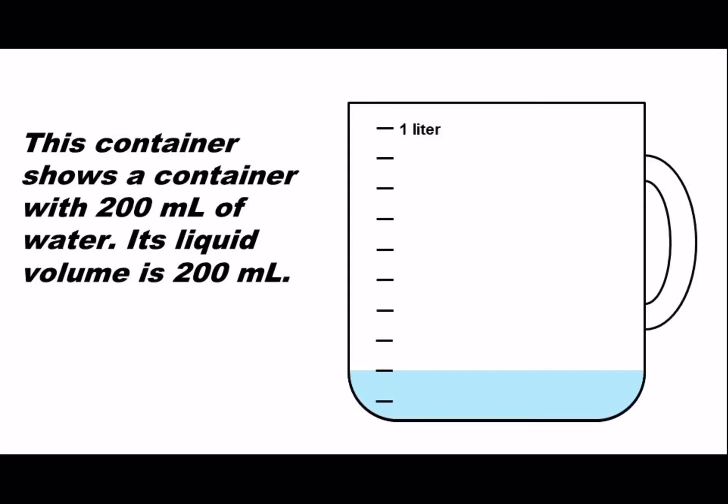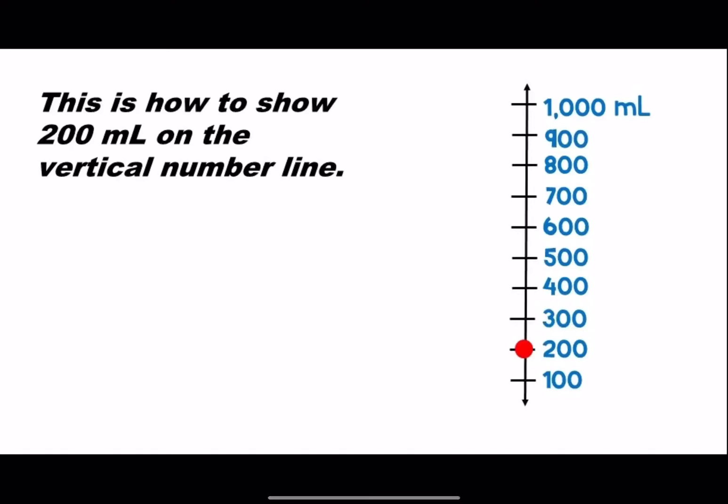This container shows a container with 200 milliliters of water. Its liquid volume is 200 milliliters. So we know that there is 200 milliliters of water in the container. This is how to show the 200 milliliters on the vertical number line.